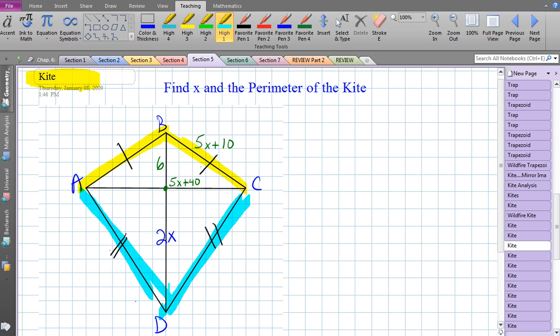When we draw the diagonals, I see we have some numbers and some expressions for some of these angles and sides. It looks like this segment here is 6, this segment is 2x, and this angle is going to be 5x plus 40.